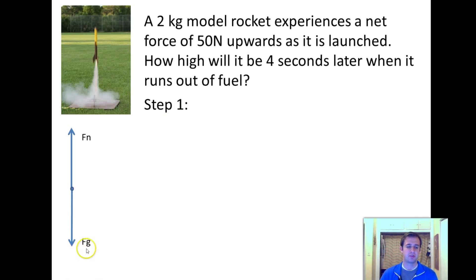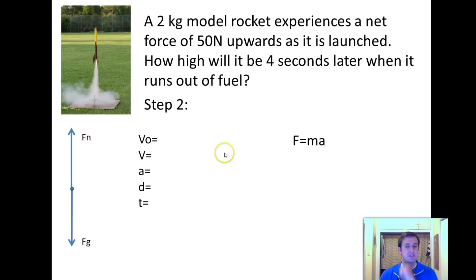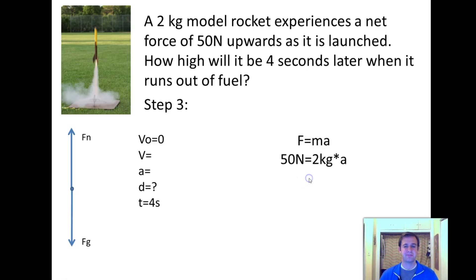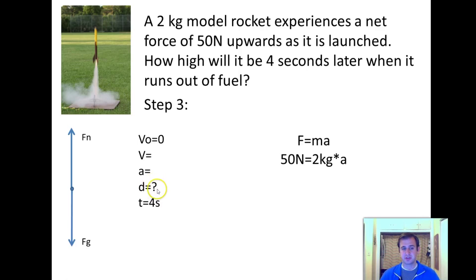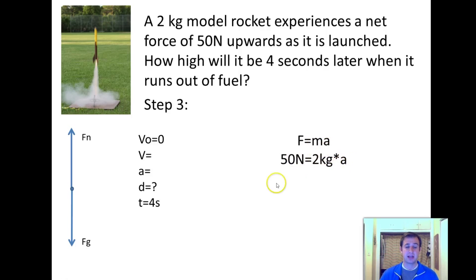Step one: draw the force diagram — gravity pulling down, normal force pushing up. Write down F = MA and V0, V, A, D, T. Plug in what we know: starting velocity is zero because the rocket isn't moving at launch, time is four seconds, and distance is our question mark. For F = MA: net force is 50 newtons up, mass is 2 kilograms, A is unknown.